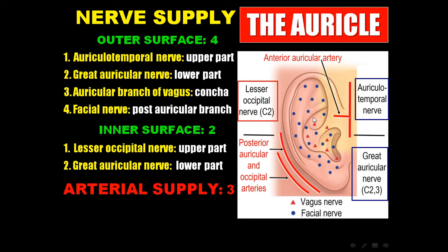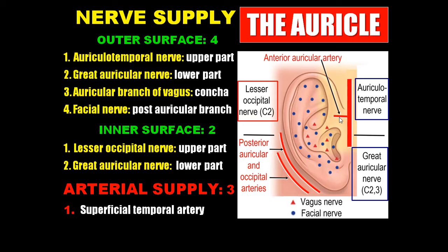Regarding the arterial supply, there are three arteries: the anterior auricular artery, which is a branch from the superficial temporal artery; the posterior auricular artery; and the occipital artery.